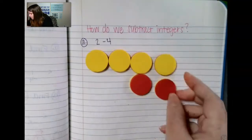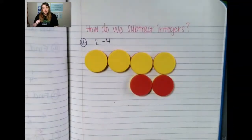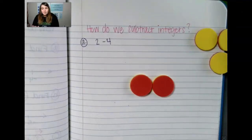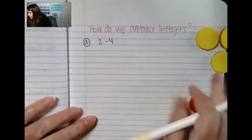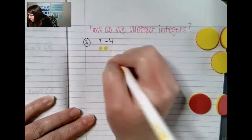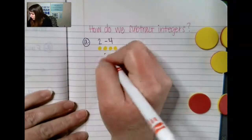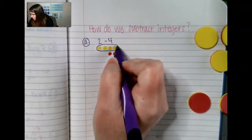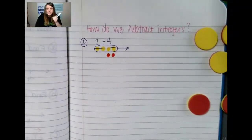The reason why we're adding on 0 pairs is because 0 has no value. So by adding on 0 pairs, we're not changing the value of this equation. So when you have 2, and then add on 0 pairs — remember this has no value — because we've created the possibility, we can now take away positive 4. By adding on 2 zero pairs and then taking away the 4 positives, we're left with 2 negatives.